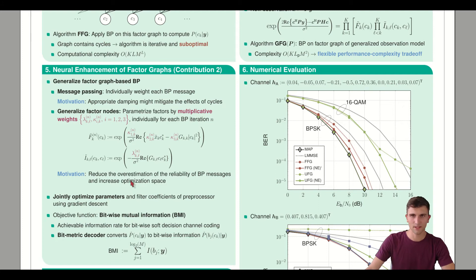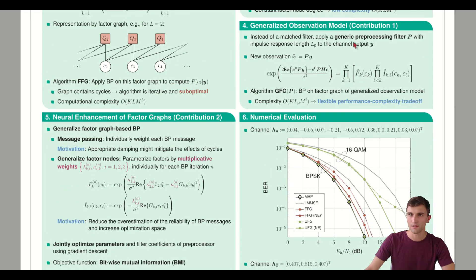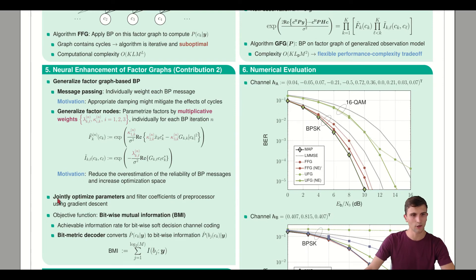Now we have these parameters: the weights on the message passing, the multiplicative weights within the factor nodes, and the filter tabs of our preprocessing filter. All these parameters are jointly optimized using gradient descent in an end-to-end manner.